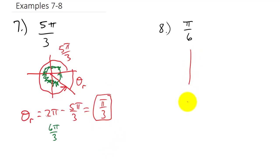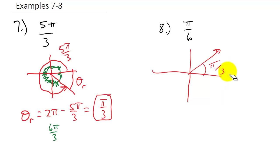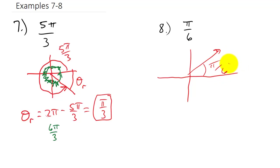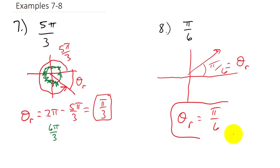The last one: pi over 6 is in the first quadrant, and since it's in the first quadrant, that is our reference angle — pi over 6. I hope this video helped. It's really important to be able to find reference angles and use them.